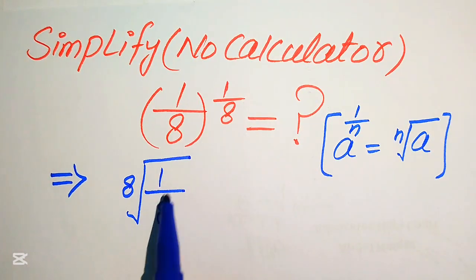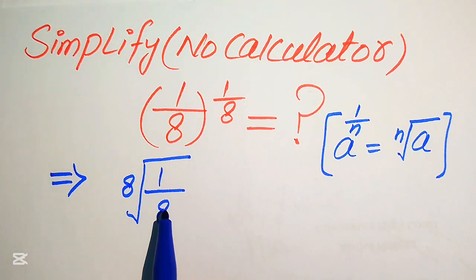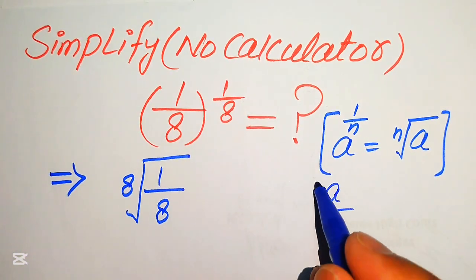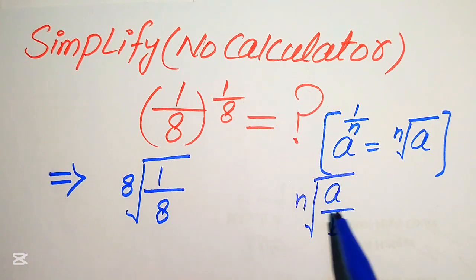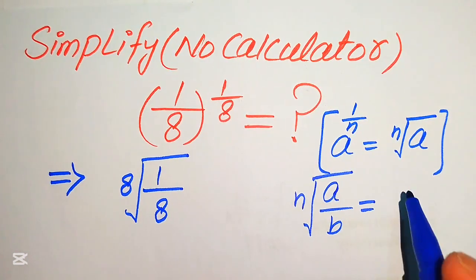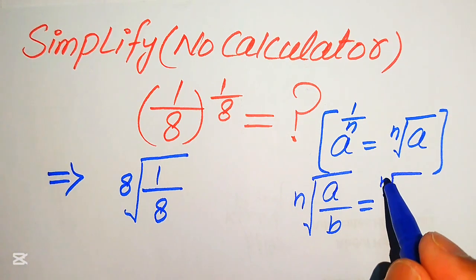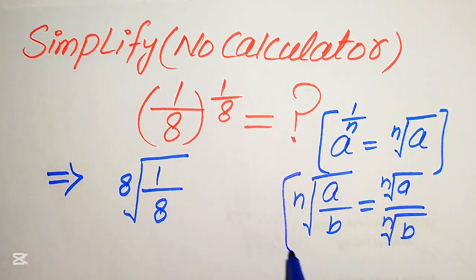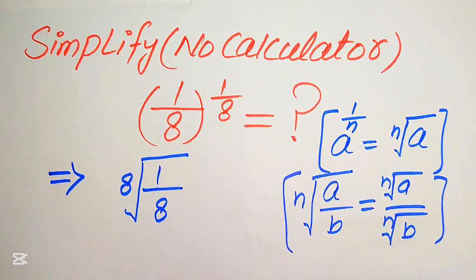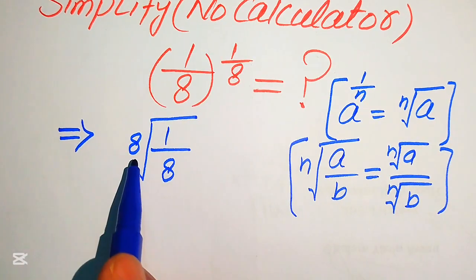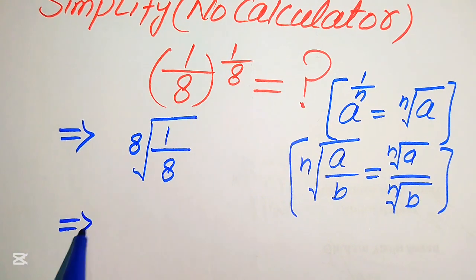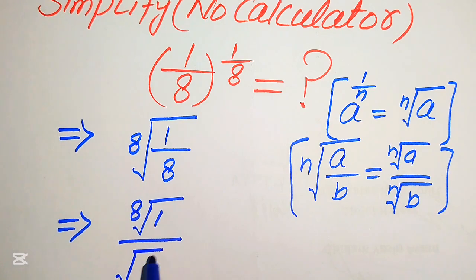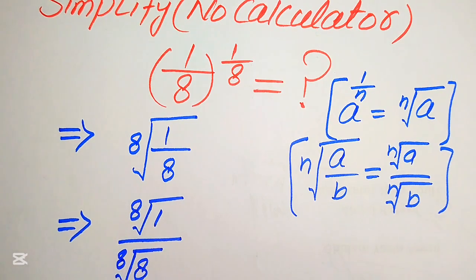According to this law, we write this expression as the 8th root of 1 over 8. Now, in the next step, we know that if we have the nth root of a over b, we write it as the nth root of a divided by the nth root of b. So we apply this exponent law and write this as the 8th root of 1 divided by the 8th root of 8.